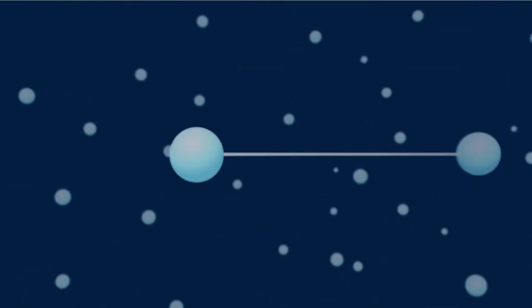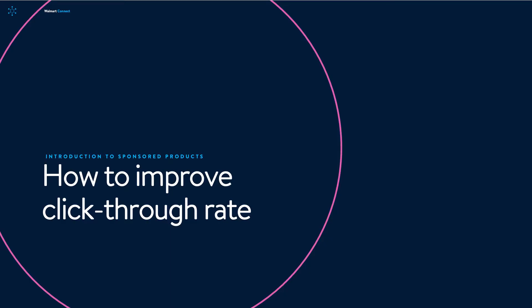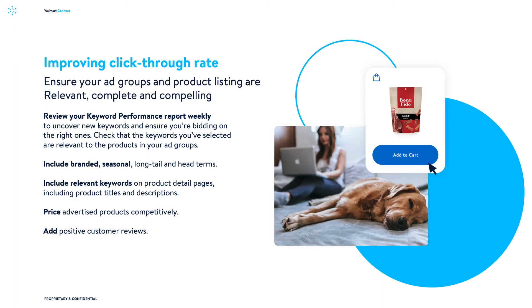In this video we will review how to improve your Sponsored Product ad impressions, click-through rate, and conversions. How to improve click-through rate: you're receiving impressions but nobody is clicking on your ad — why is that? Is your Sponsored Product compelling enough for shoppers to click through?